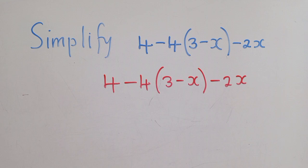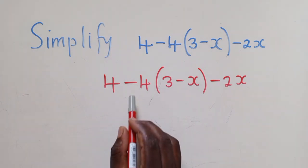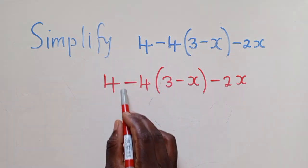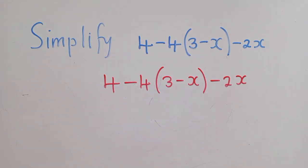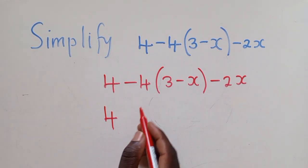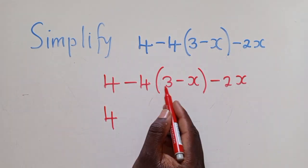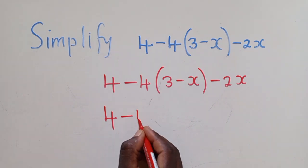By simply multiplying whichever value is in front of the brackets together with each sign by what is inside. So 4 we'll maintain. We say negative 4 times 3, that is negative 12.